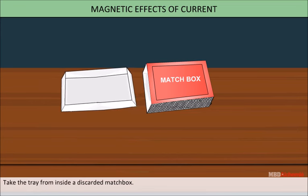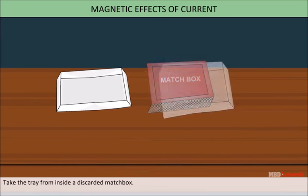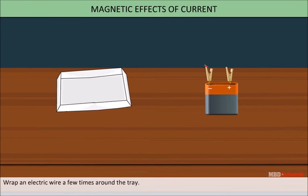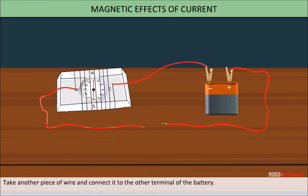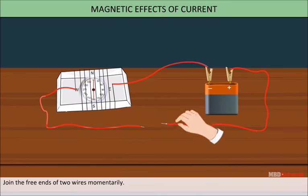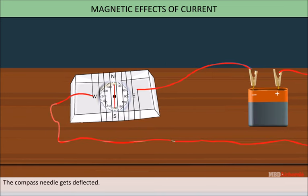Take the tray from inside a discarded matchbox. Wrap an electric wire a few times around the tray. Place a small compass needle inside it. Now, connect one free end of the wire to the terminal of the battery. Leave the other end free. Take another piece of wire and connect it to the other terminal of the battery. Join the free ends of the two wires momentarily. The compass needle gets deflected.